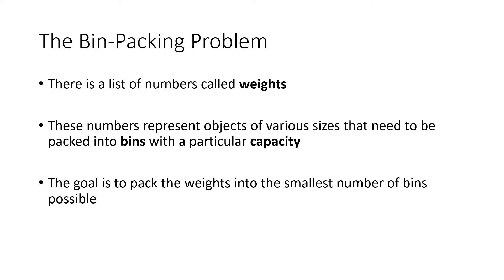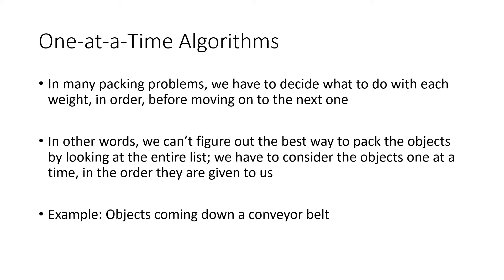Just to refresh your memory, the bin packing problem gives us a list of numbers called weights. Those numbers represent objects of various sizes that need to be packed into bins that have a particular capacity — the total amount of weight that each bin can hold. The goal is to pack the weights into the smallest number of bins possible. An example where this is a realistic approach is objects coming down a conveyor belt, where we can't look ahead to see what's coming and have to deal with each item as it arrives.